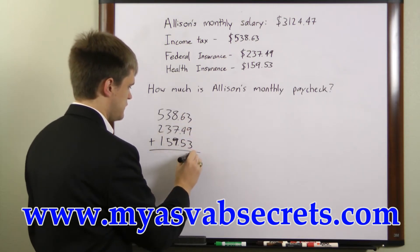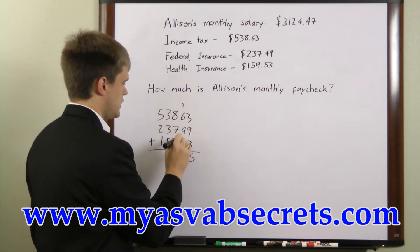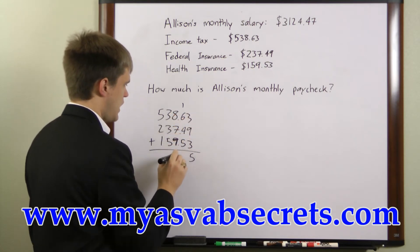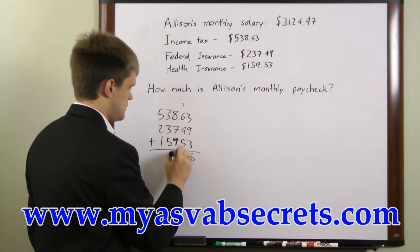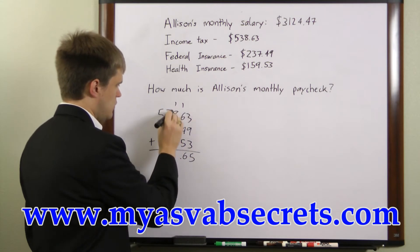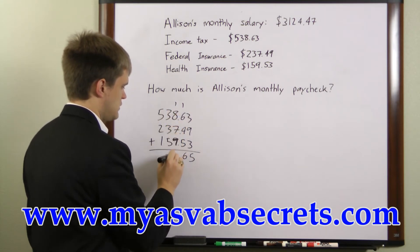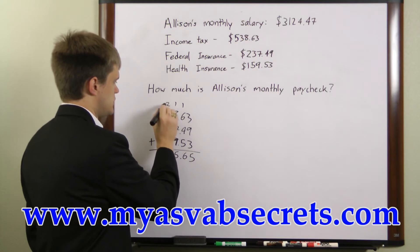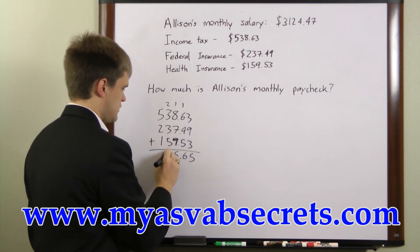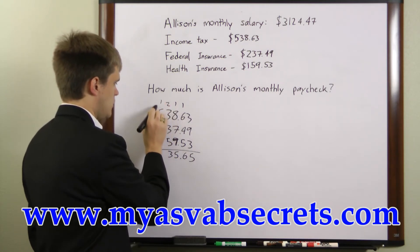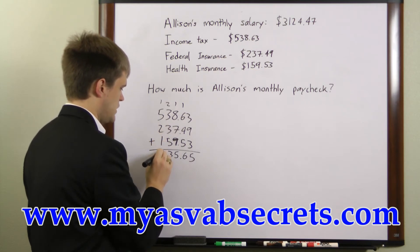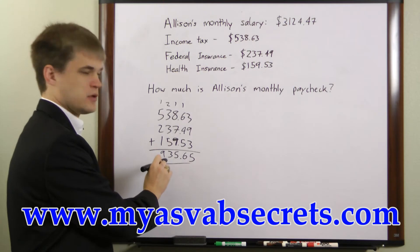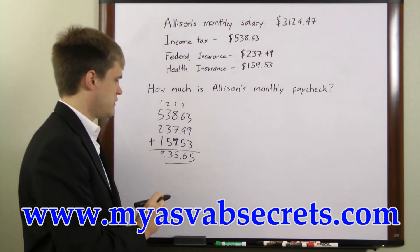So we'll add these up. In the hundredths column: 3, 9, and 3 is 15 — carry the one. In the tenths column: 1, 6, 4, 5 is 16 — carry another one. In the ones column: 1, 8, 7, 9 is 25 — carry a two. In the tens column: 2, 3, 3, 5 is 13 — carry a one. In the hundreds column: 1, 5, 2, 1 is nine. So all the deductions together are $935.65.